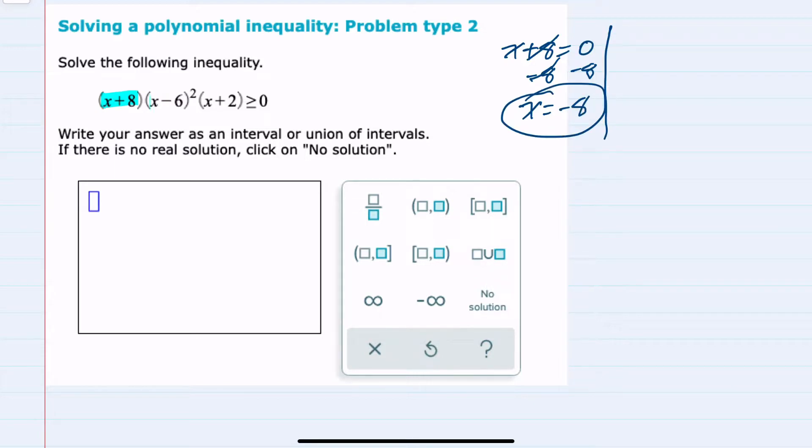The second factor is x minus 6, setting that equal to 0. And solving for x by adding the 6 over to the other side gives me x equals 6.